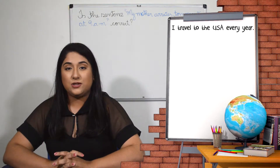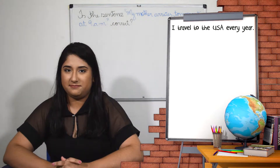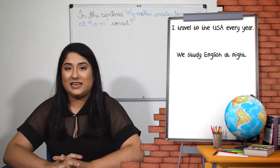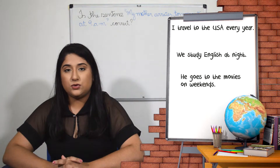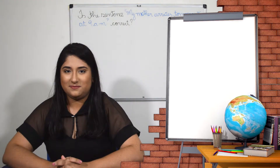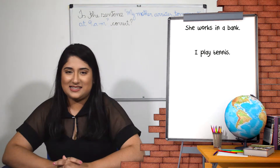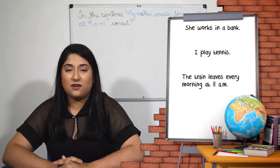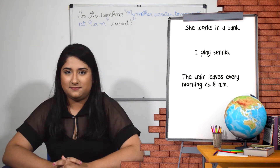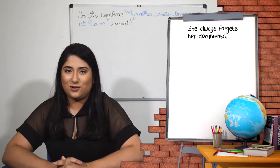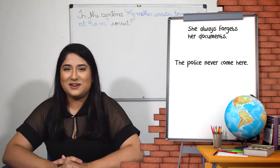The third use is about actions — specifically actions or things that happen regularly. Examples: I travel to the USA every year. We study English at night. He goes to the movies on weekends. She works in a bank. I play tennis. The train leaves every morning at eight. She always forgets her documents. The police never come here.